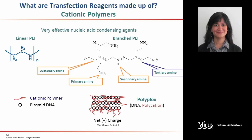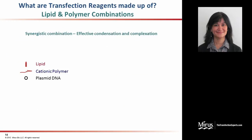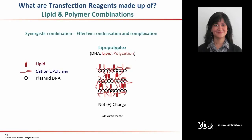These polyplexes also need to have a net positive charge. Now that we have discussed what major classes of compounds make up transfection reagents, I am going to briefly describe what our transfection reagents are made up of. We employ unique lipid and polymer combinations that work synergistically to provide effective condensation and complexation of nucleic acids. Since our reagents are made up of both lipids and cationic polymers, the transfection complexes that result from interaction with plasmid DNA are referred to as lipopolyplexes.